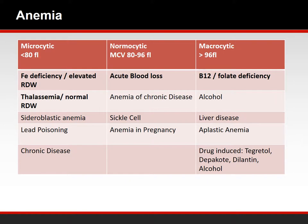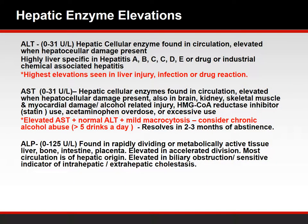When lab work returns, the CBC is typically the first test ordered. Review the types of anemia: microcytic, normocytic, and macrocytic. The most common microcytic anemia is iron deficiency. Normocytic is often seen with acute blood loss. Macrocytic anemia is associated with B12 and folate deficiency. Drug-induced macrocytic anemias are also important to recognize, and the most common drug-related causes are listed for your reference.